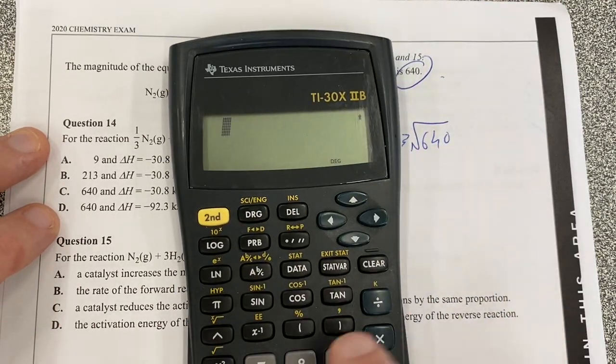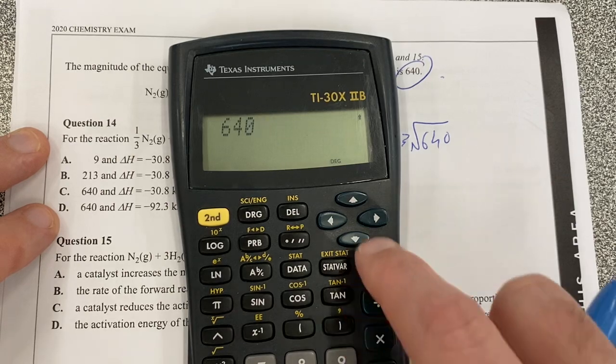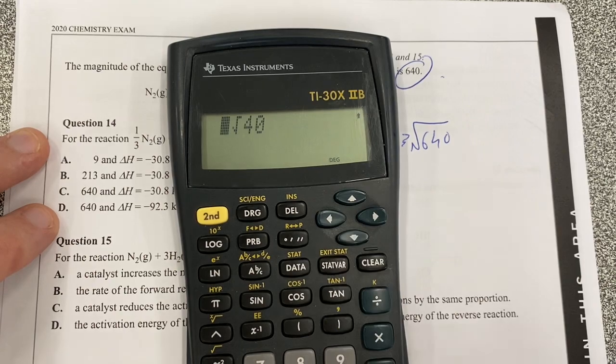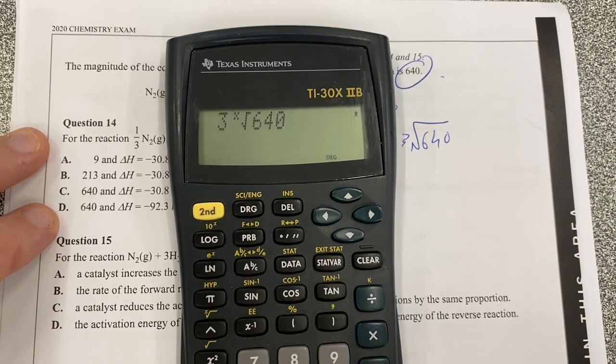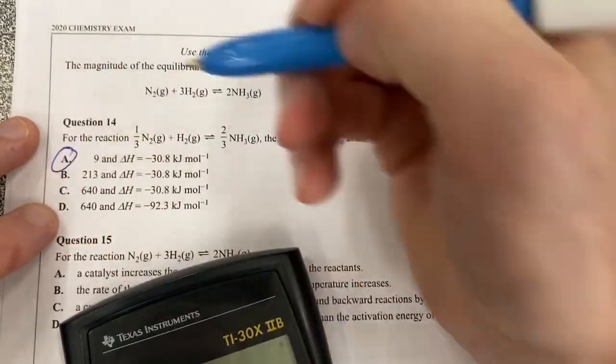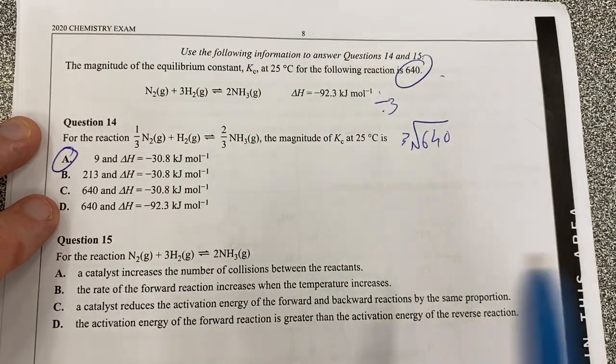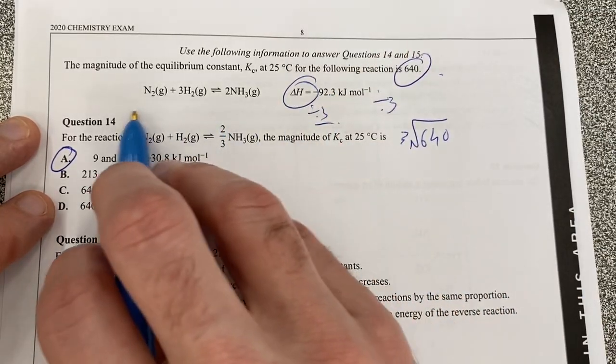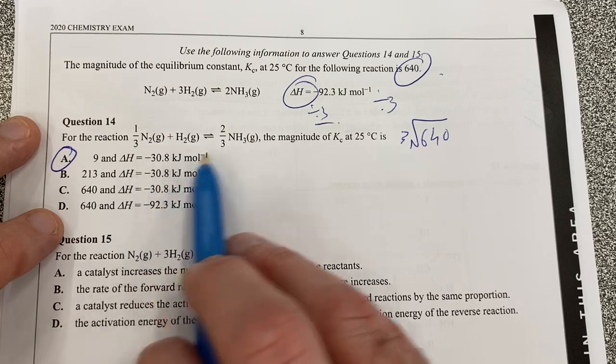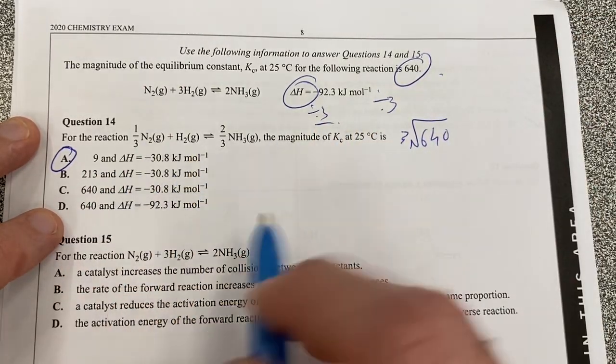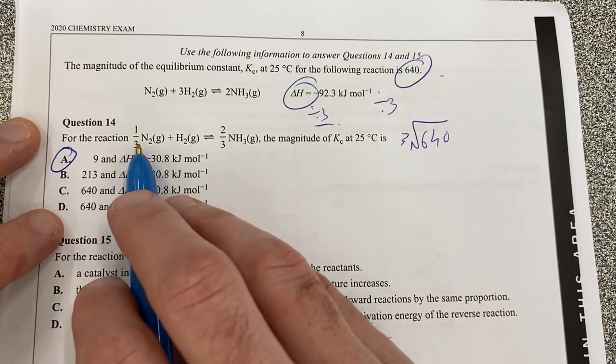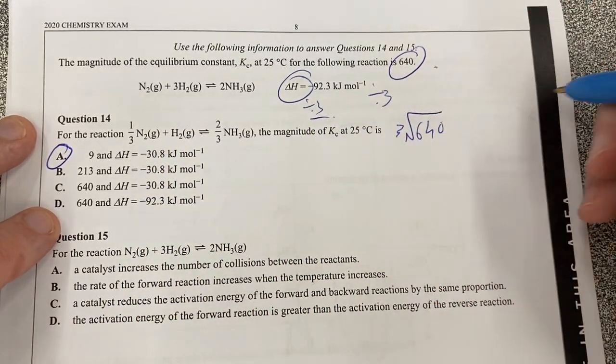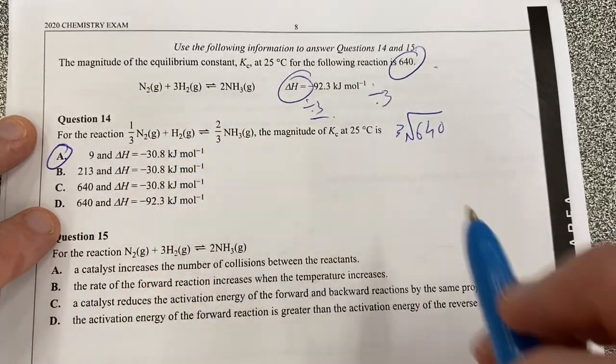Let's have a look. So 640 and how do I cube root on this calculator? Second function cube root. Alright 3 cube 640 is 9 so it's going to be A by the looks of it. Alrighty and your delta H here will be divided by 3 because it's in line with your coefficients. So therefore we're dividing that by 3. So that's what's happening if you're getting a third. It's a bit tricky because we don't normally do thirds for manipulation of K but that's the idea there. Your coefficients as to the power whatever your coefficient changes.